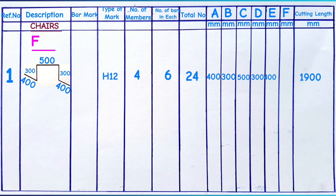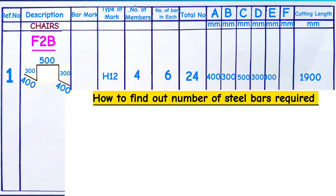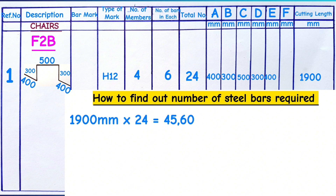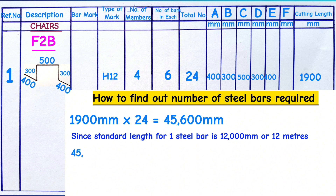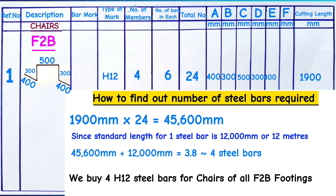When you want to know the exact number of steel bars to purchase from the hardware store or factory for the chairs, come to the cutting length — say 1.9 meters. Multiply 1.9 meters by the total number of pieces, say 24: 1.9 times 24 equals 45.6 meters. Since each steel bar is 12 meters long, divide 45.6 by 12 to get 3.8 steel bars, equivalent to 4 steel bars. So we purchase four H12 steel bars to cater for chairs for all F2B footings.